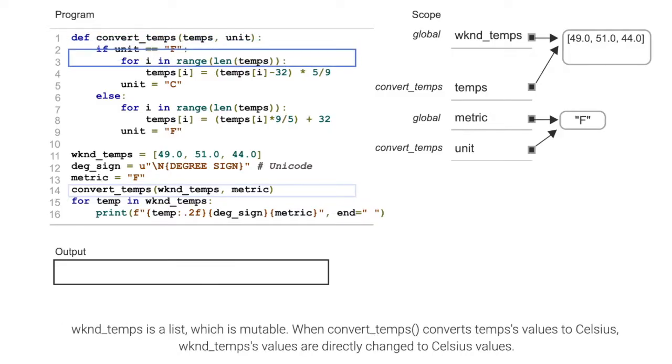Wknd_temps is a list, which is mutable. When convert_temps converts temps' values to Celsius, wknd_temps' values are directly changed to Celsius values.